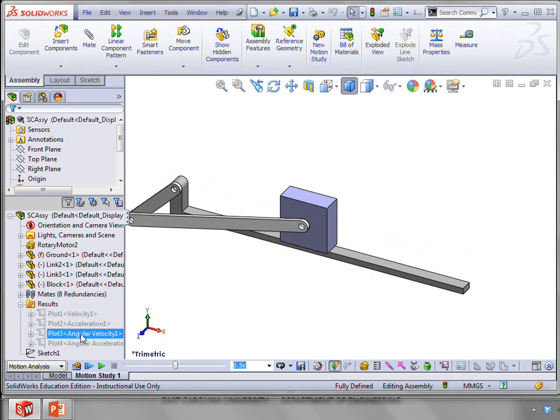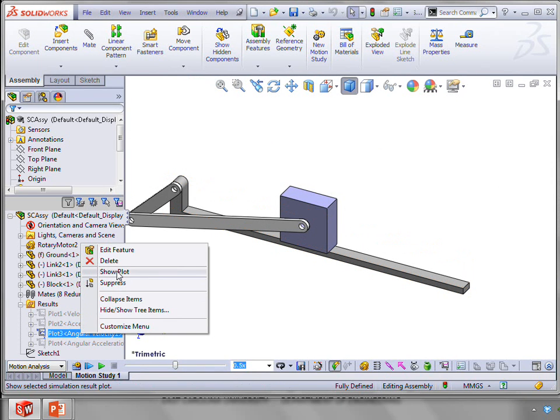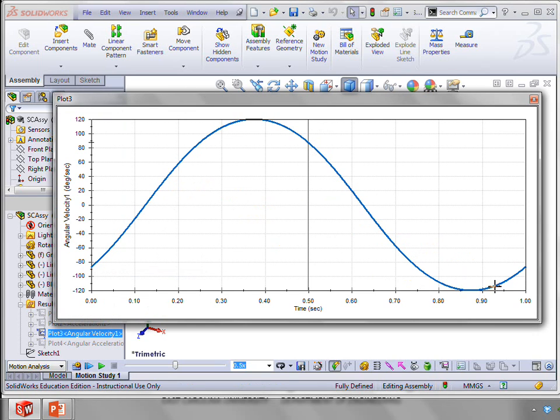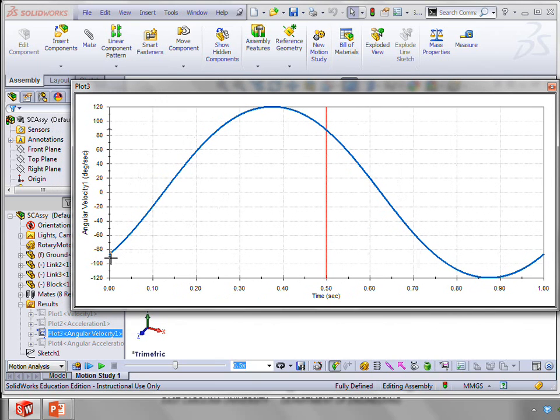Looking at a plot of the angular velocity of the connector, this is for one full revolution, but the starting point is at 45 degrees crank angle. We can see that our number at degrees per second agrees, a little less than minus 90 degrees per second. So that number matches up.